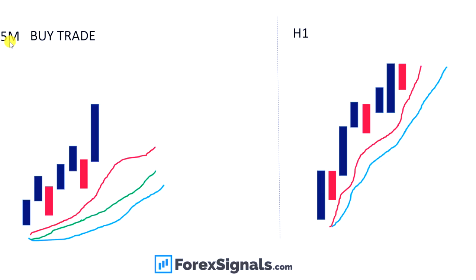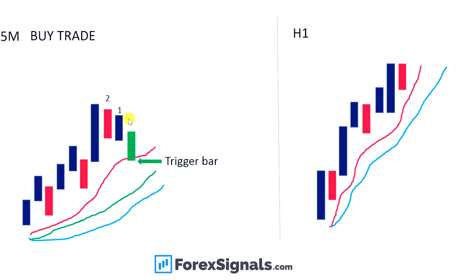We then drill down to our trading chart — in this example, the 5-minute chart. You can also use this scalping strategy on the 15-minute chart; do some back-testing. We're looking for the fanned-out moving averages — nicely fanned out: the 8, the 13, and the 21. We look for price to pull back into the 8 moving average. There — a touch at the 8 moving average. That becomes our trigger bar. We now count back five bars — one, two, three, four, five — and enter a buy stop order three pips above the highest of those five bars.